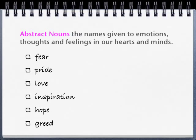Abstract nouns are the names given to emotions, thoughts and feelings in our hearts and minds. For example: fear, pride, love, inspiration, hope and greed.